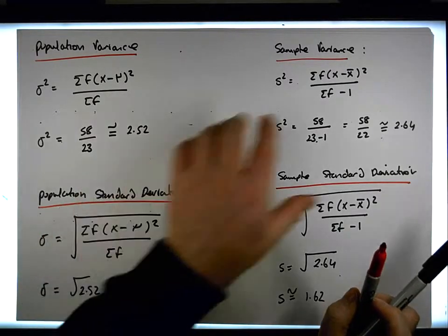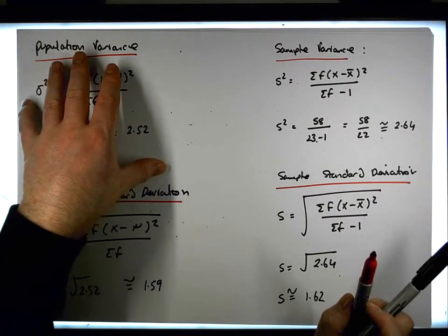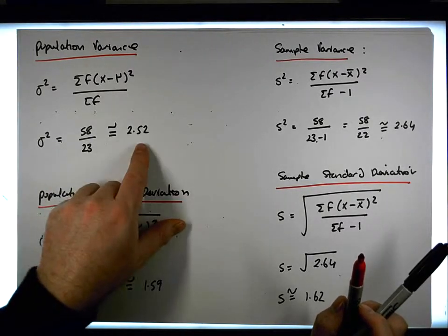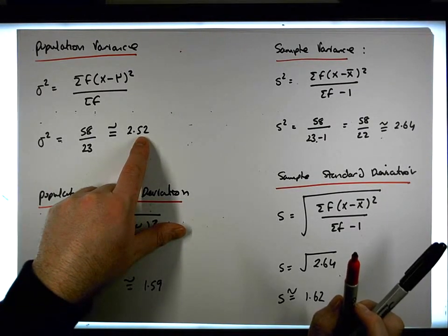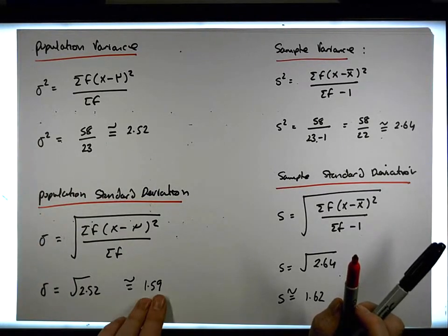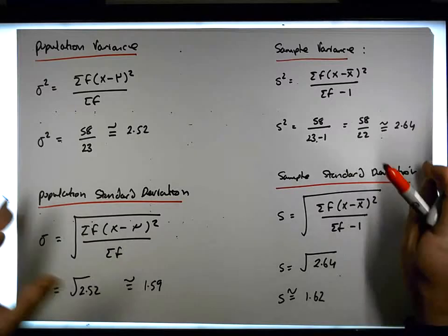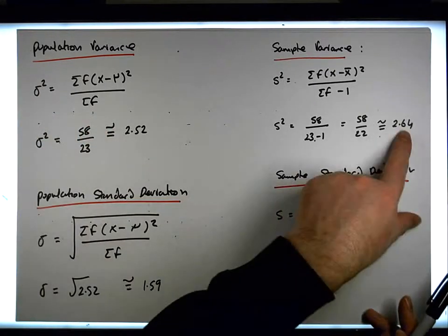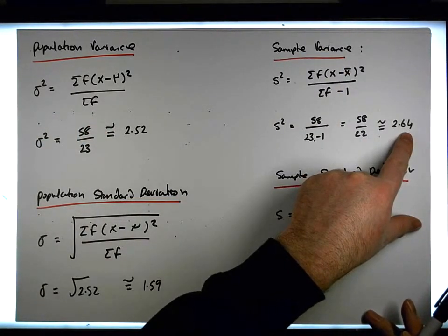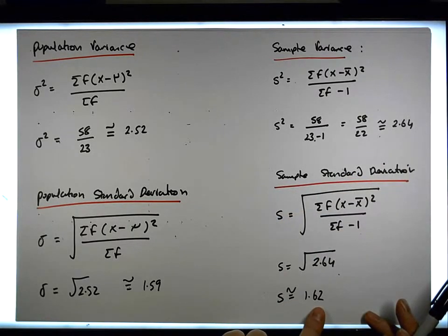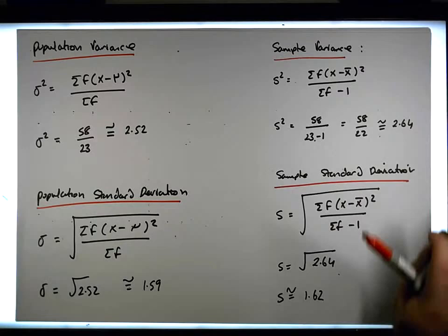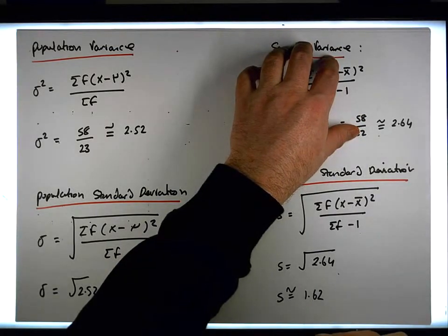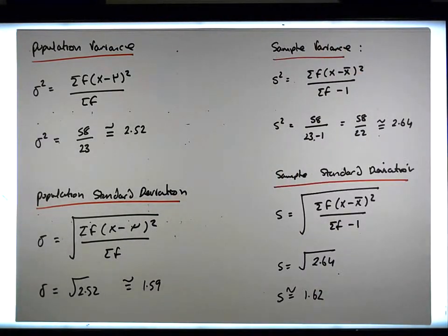What this is saying is: when you have the population data and you calculate these values, you know with 100% certainty that this is the actual variation within the data set from a variance and standard deviation perspective, because it's all the population data you have at hand. When you take a sample, because you haven't taken all the values from the population, you've introduced some uncertainty — there's more variation in the sample from a standard deviation perspective. This is bigger than this, which is what we'd expect. There's more error in relation to our measurements.